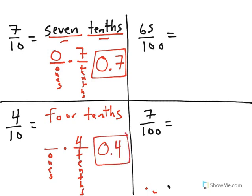Now, when you go to the hundredths place, it's a little different because that's an extra place that we have to go to. So, 65 hundredths, we're going to say 65 hundredths.